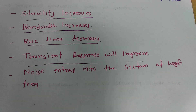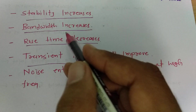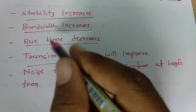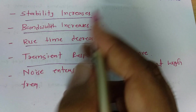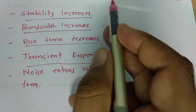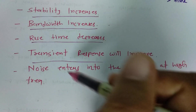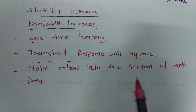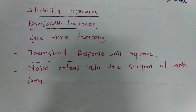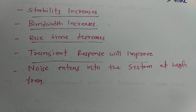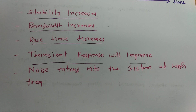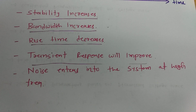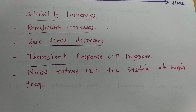So as the lead compensator is a high-pass filter, noise enters into the system at high frequency. To summarize: it increases stability, it increases bandwidth, rise time goes down, transient response improves, there could be an increase in maximum peak overshoot, and noise enters at high frequency. These are the effects due to the lead compensator. In the next video, I will be explaining the lag compensator. Thank you so much for watching.